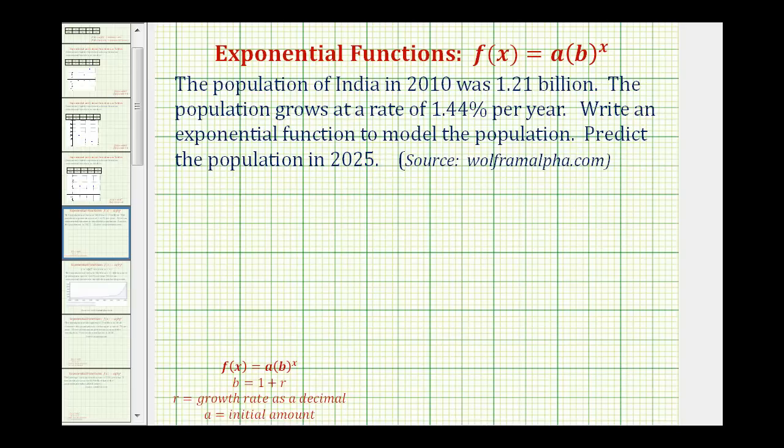To model this population growth, we're going to use the exponential function in this form: f of x equals a times b raised to the power of x, where the base b is equal to one plus r.